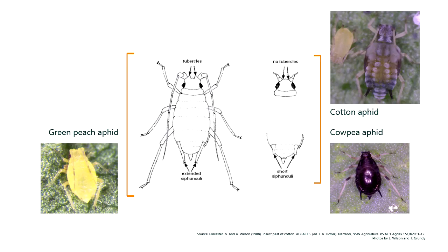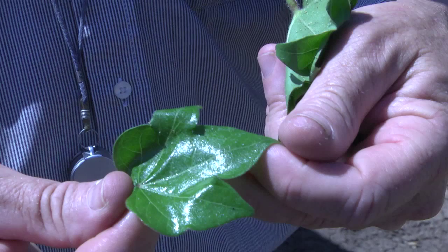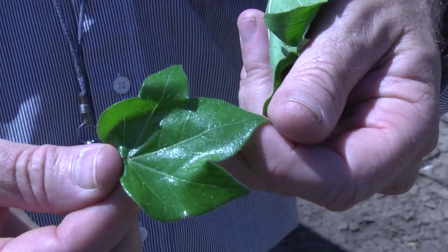Cotton aphid can affect the crop in three main ways. The first, and probably the thing we're most concerned about, is that as a by-product of feeding they're actually excreting a lot of sugars, and if that gets on the bolls it causes contamination which leads to problems later down in processing.